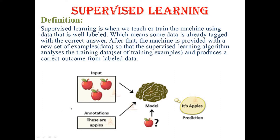For example, if we give the machine a picture of a dog and tell it that this is a dog, and if we give a picture of a cat we tell the machine it is a cat — we keep giving different inputs with labels like this is dog, this is cat. In this way we are training the machine so that it can identify new data. Supervised learning works on labeled data.